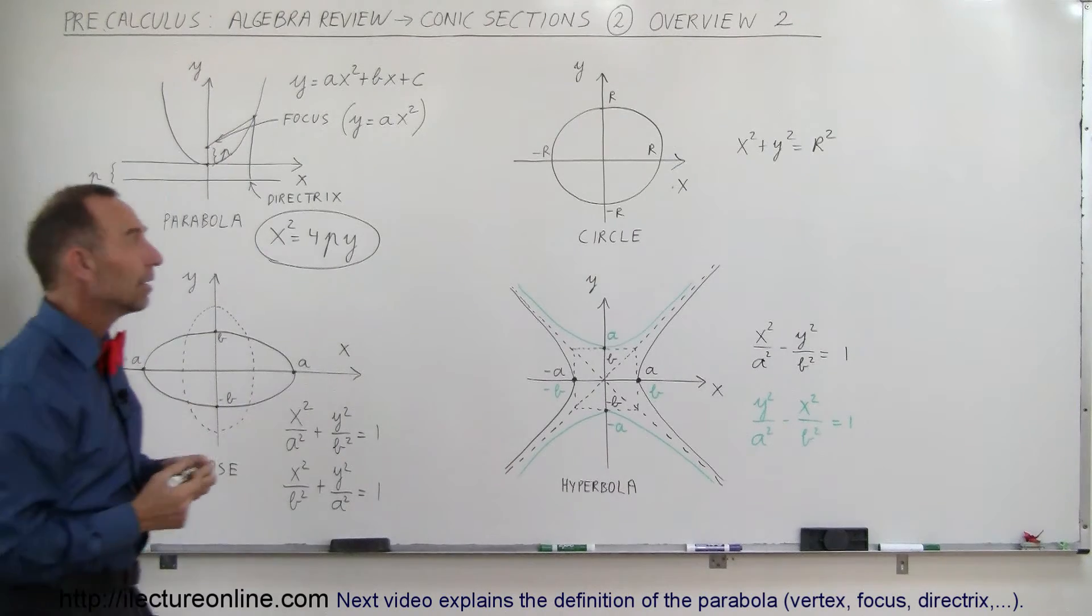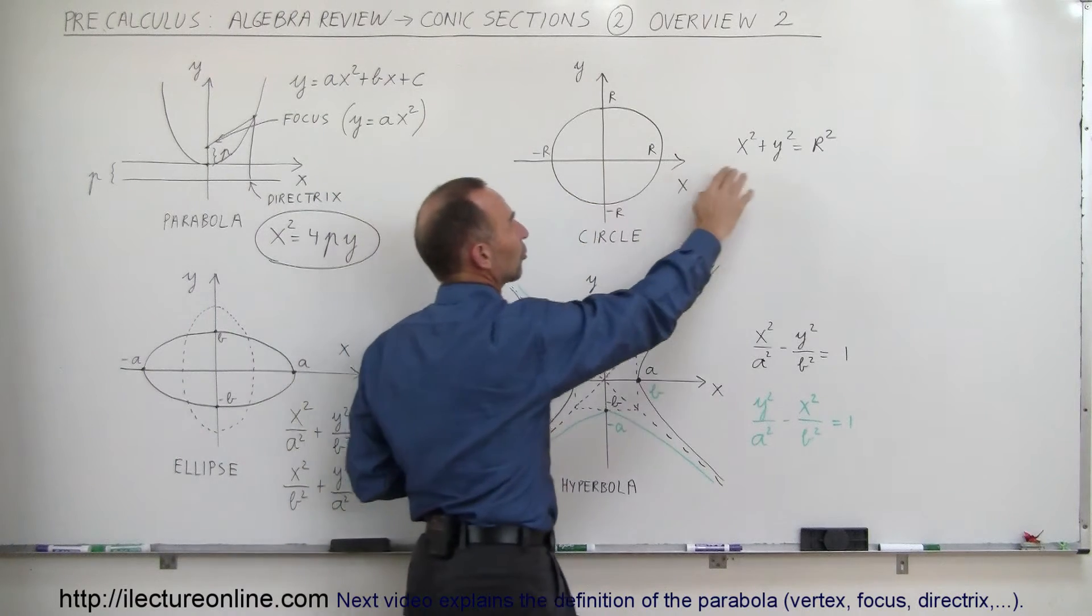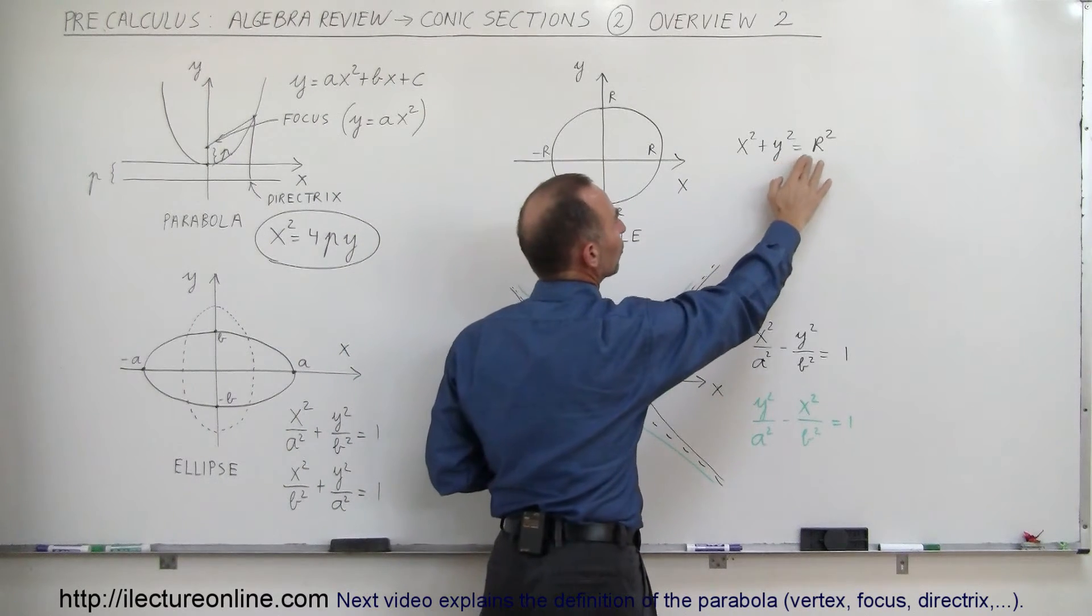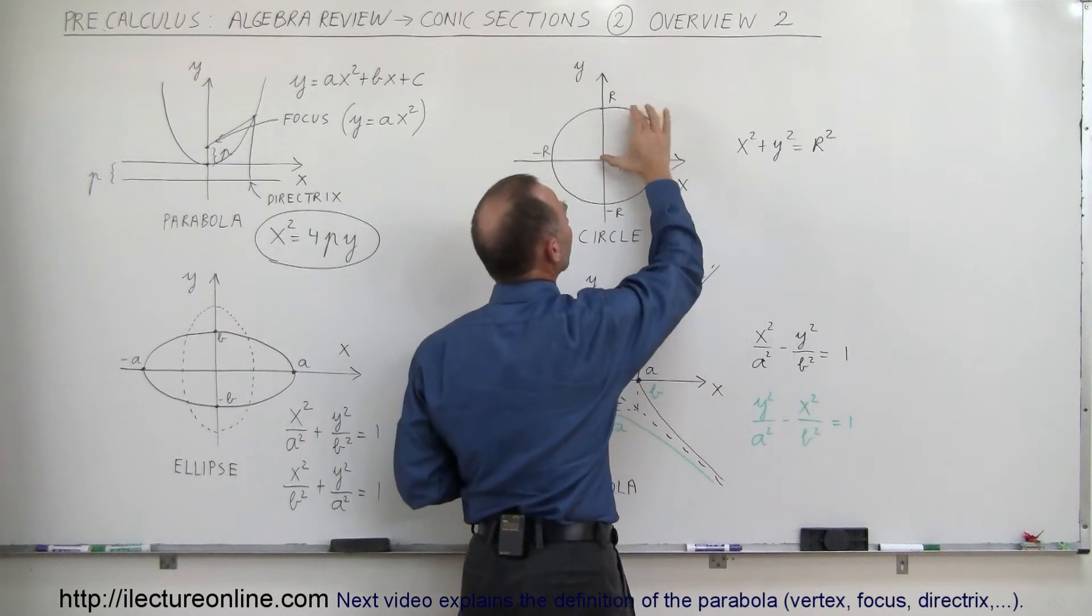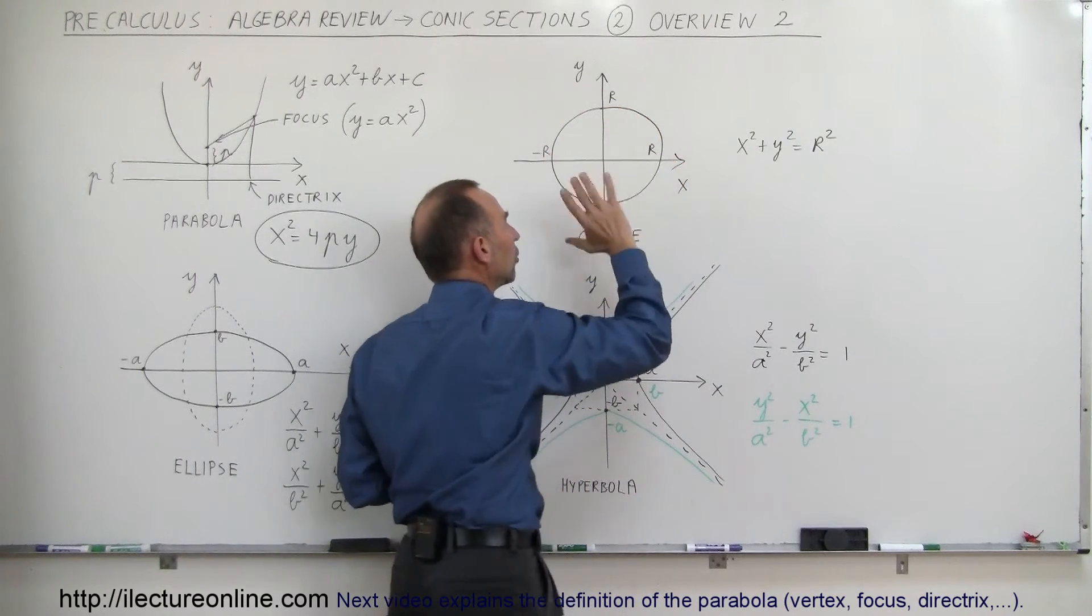The circle is something that's a little bit more straightforward. If we place the circle at the center, the general equation for the circle will be x squared plus y squared equals r squared, where r is simply the radius of the circle. So the distance from the center of the circle to any point on the circle is all r.